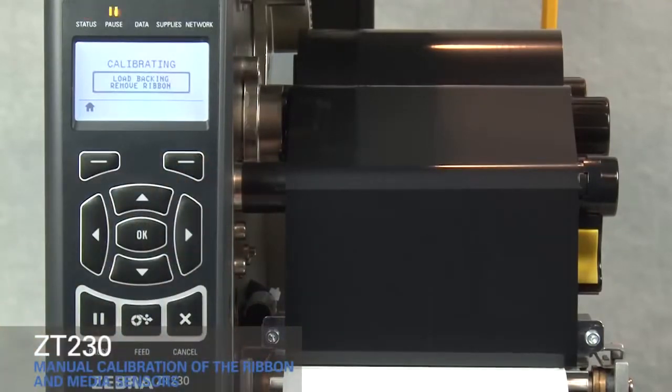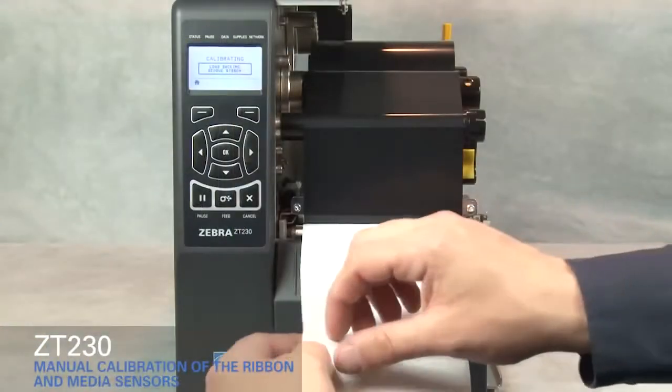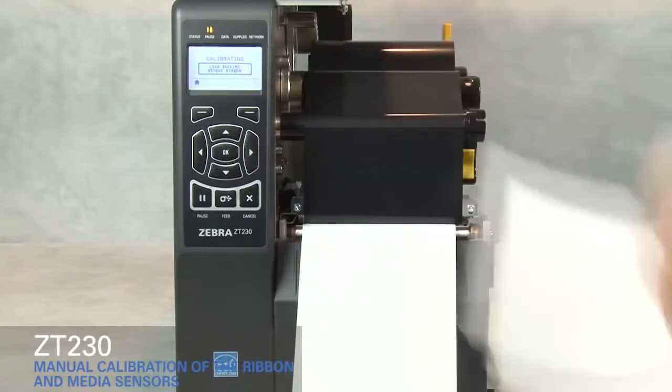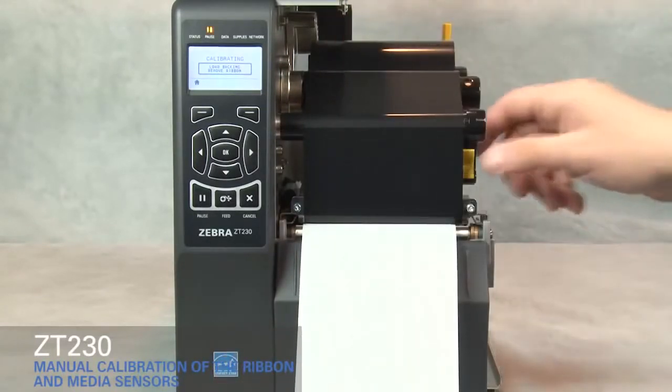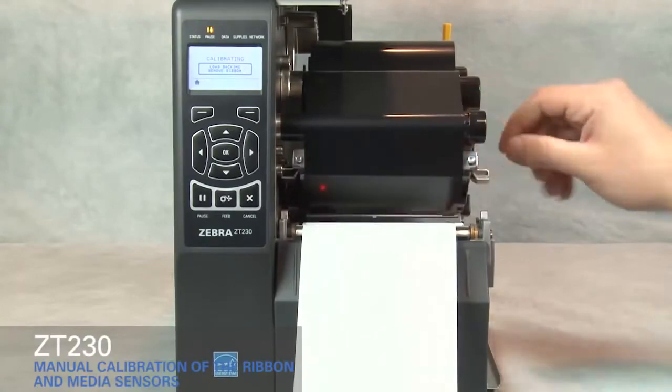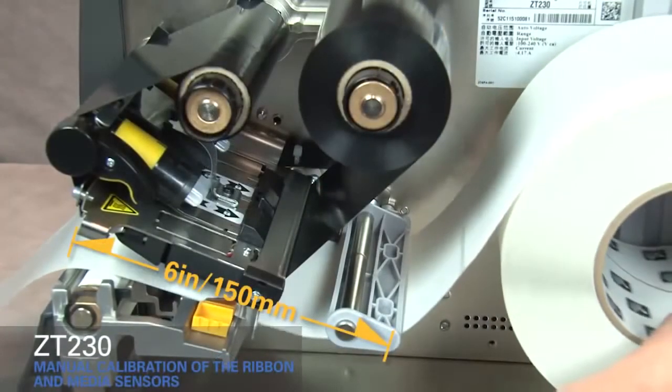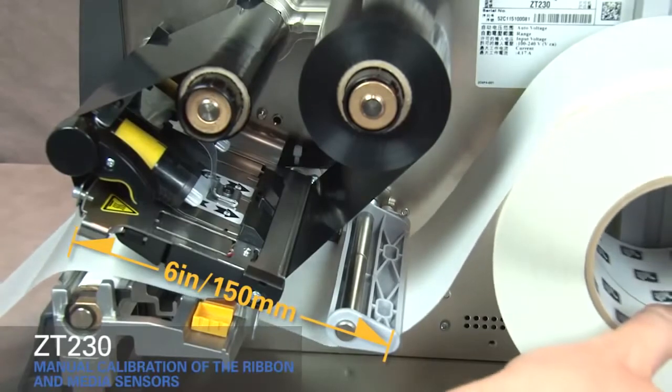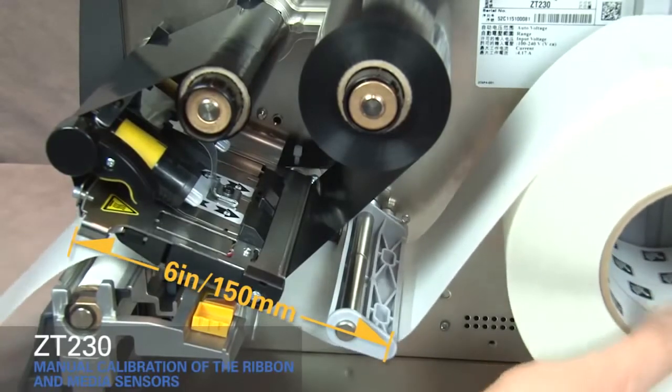Pull media out and remove about 6 inches or 150 millimeters of labels from the liner. Rotate the gold print head lever up to open the print head. Roll media back into the printer so that only the backing is between the media sensors.